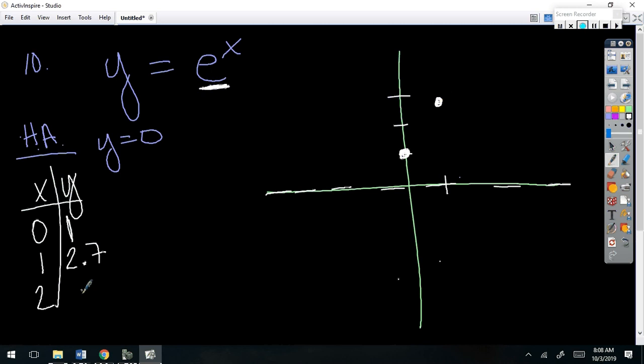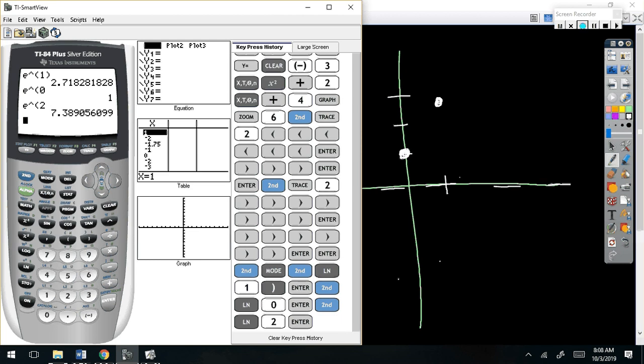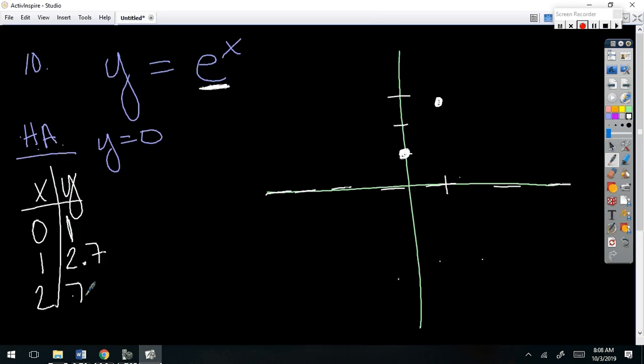And really, 2 is probably going to be too big for me to graph but we'll do it. E to the second, 7.4. It's way up there. So it's just going to shoot up really fast. It's going to hug the asymptote from this side.